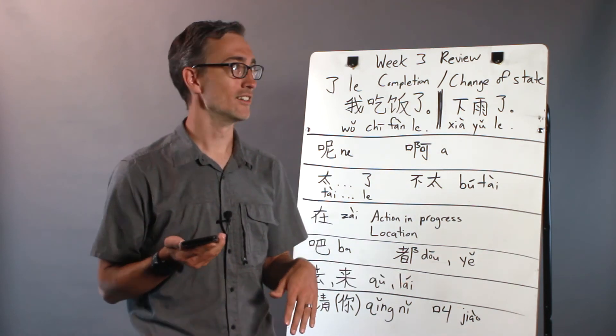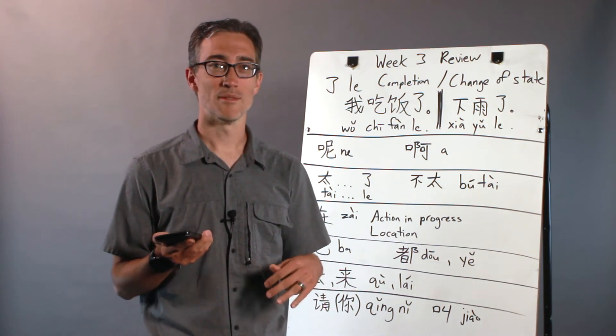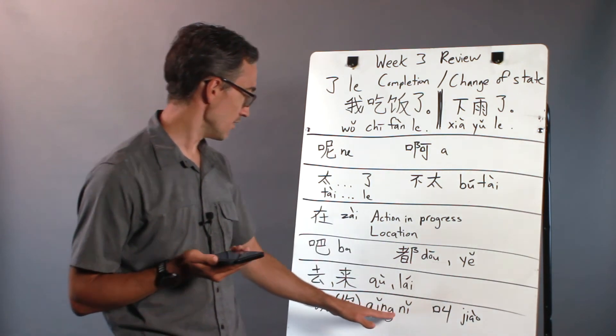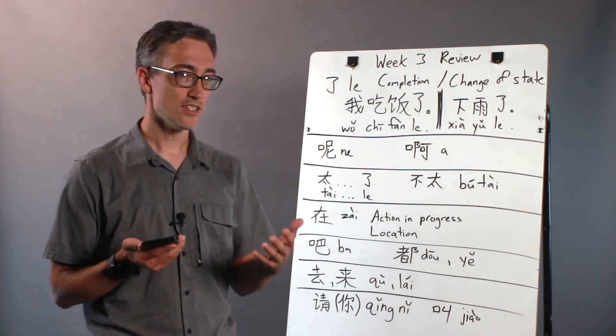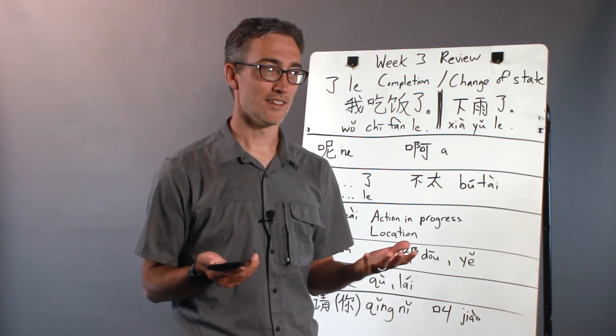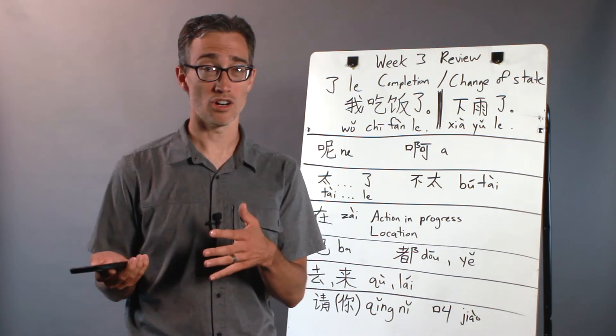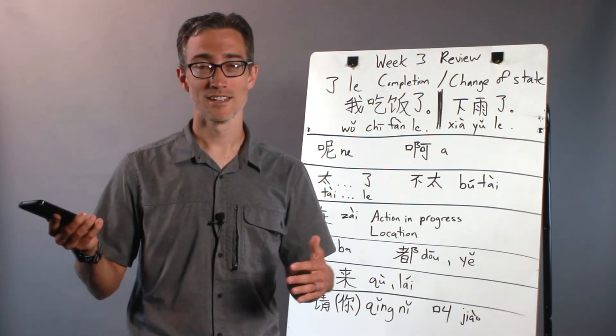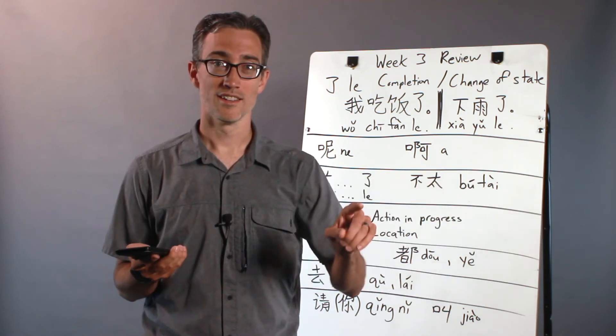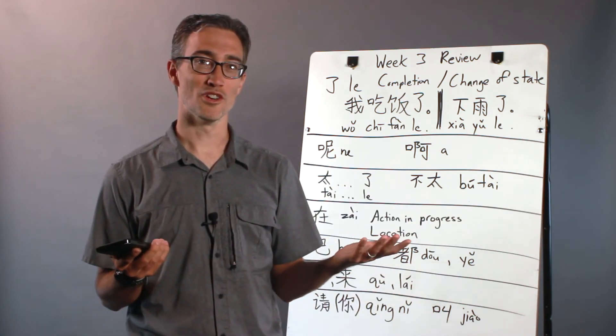我来吃饭, that means I have come to eat, or I will come. And then 请 or 请你 is a polite way to say please. 请坐, please sit. And 叫 means to call or to be called. It's the verb that is used to refer to, ask something or talk about something, what its name is or what it's called. It's a great way to ask someone's name or to ask how do you say, you know, how do you say chair. You can point to a chair and say 这个叫什么, this, what is this called. And you can use that phrase to learn words you don't know. So it's very helpful.